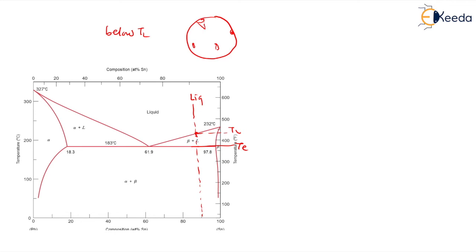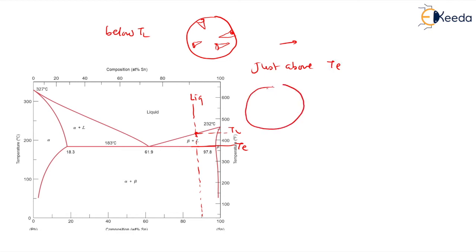Beta will start nucleating and growing from TL to T, and just above Te it will have completely grown in the form of a dendrite.